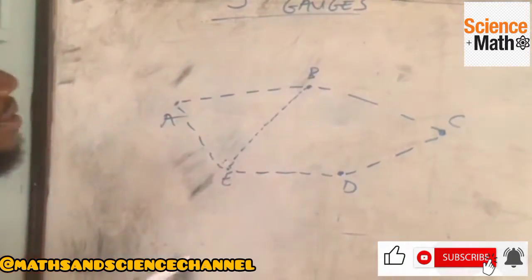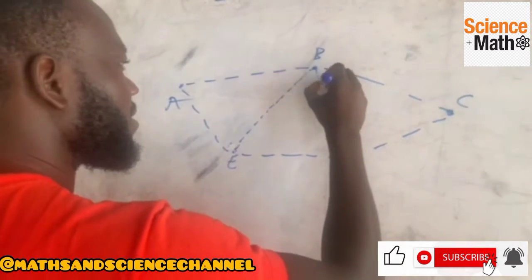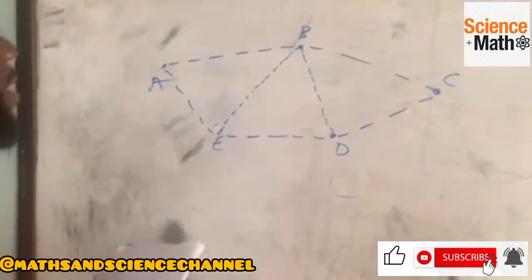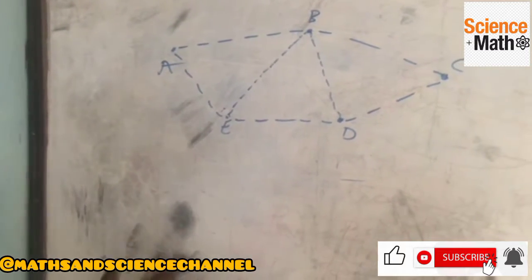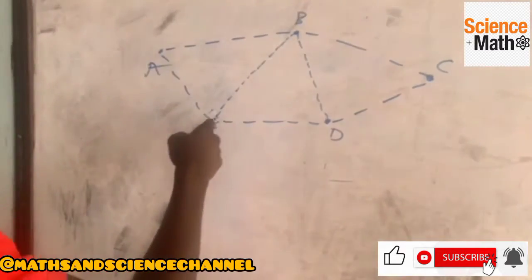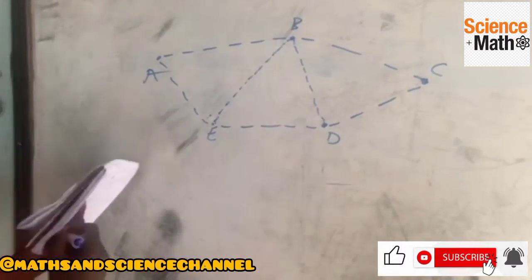Mind you that the bisectors, when you are joining the lines together, they shouldn't cross each other. Like this line, there shouldn't be another line that will cross, maybe this one. It makes it wrong.